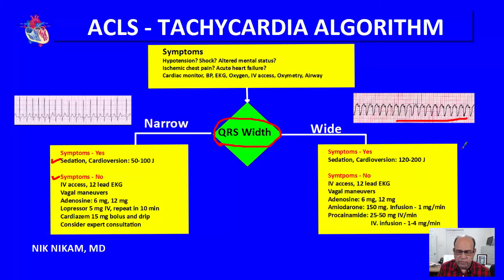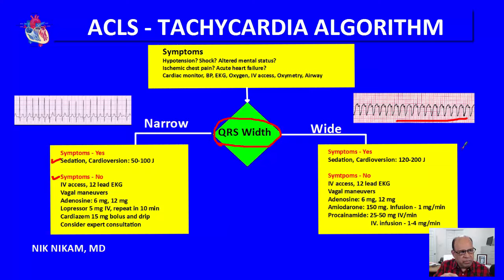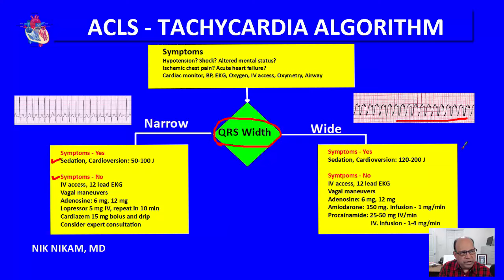If that doesn't work and the QRS complex is most likely ventricular in origin, try amiodarone 150 mg bolus followed by an infusion at 1 mg per minute. We can also try procainamide, which is especially useful in supraventricular tachycardia with aberration involving an accessory pathway. Procainamide is started at 25 to 50 mg IV per minute over 10 minutes.